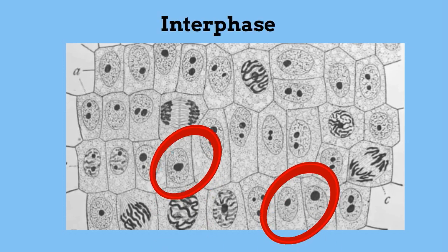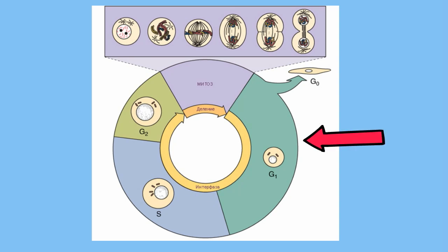There are three phases to interphase. Phase 1 is called G1. The G stands for Gap. During this phase the cell grows and carries out normal cell activity.